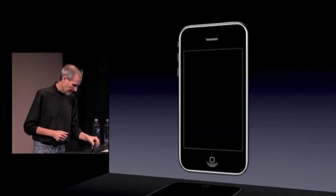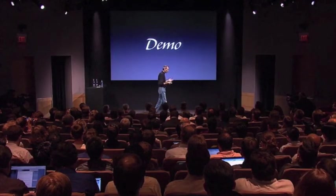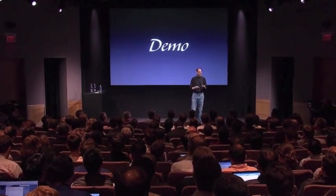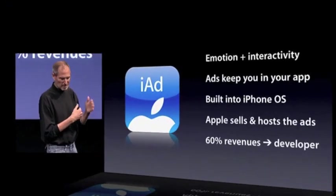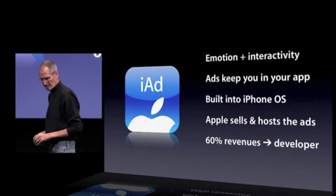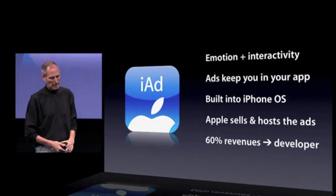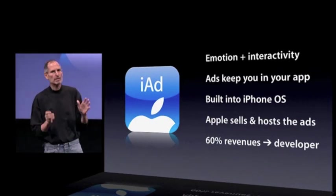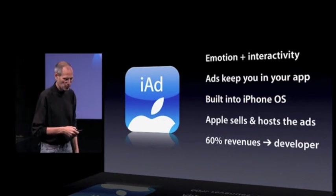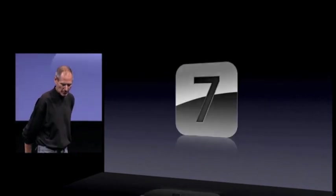So that's an example of three ads that are very easy to make. And in addition to ad agencies being able to make these things, there are hundreds of thousands of iPhone app developers that know how to make those things. We think this is gonna be pretty exciting. Emotion plus interactivity. The ads keep you in your app, so you're much more likely to click on them and want to go explore them, because you can always get back with just a touch. iAd is built into iPhone OS — the framework is. So it's really easy for developers to add iAd opportunities to their app. Apple will sell and host the ads, and the developer will get the majority of the revenue. So that is iAd, and that is our seventh tentpole.